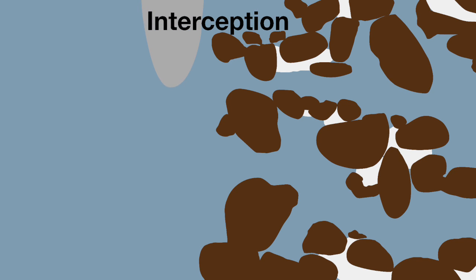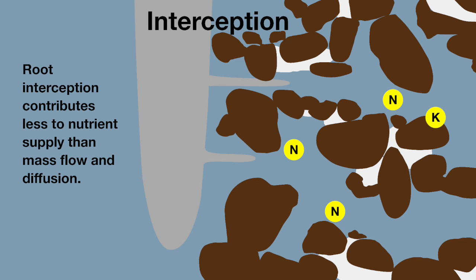Thirdly, there is root interception. As roots branch and elongate, they come into contact with a larger pool of ions in the soil. A large and actively growing root system is favorable for root interception and absorption of nutrients. However, root interception contributes less to nutrient supply than mass flow and diffusion.